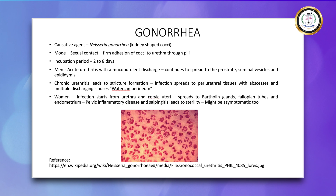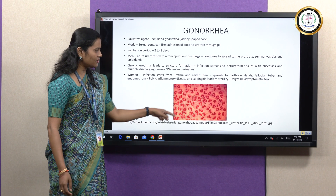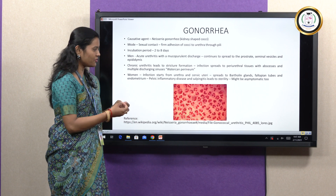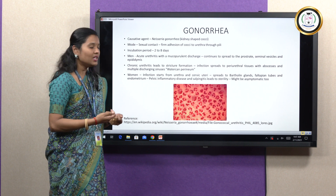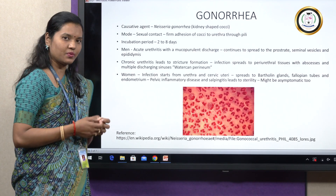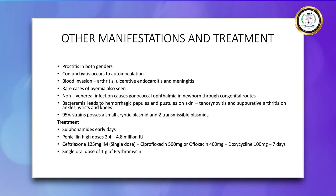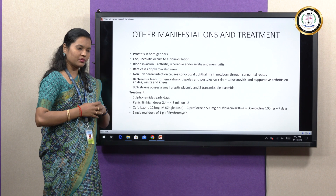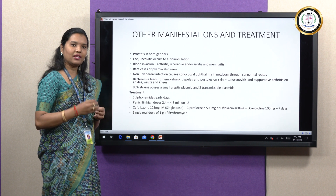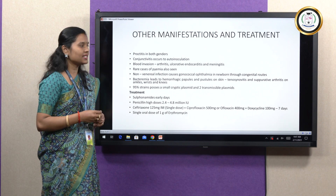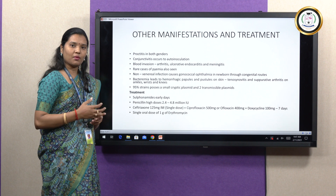This is an image of Neisseria gonorrhoeae — the small spots seen here are the organisms. This is an image of an urethral smear which contains the organisms, which are diplococci. Other manifestations of the infection: proctitis is very common in both sexes. In women it occurs through direct spread, but in men it is through anal sex. Conjunctivitis is also a common type of infection, especially through auto-inoculation from the patient's fingers.